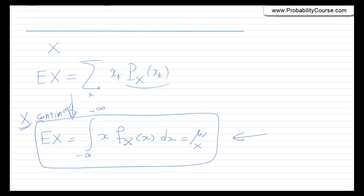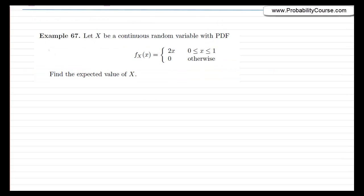So that's our formula. Let's look at an example to make sure we can use it. Let X be a continuous random variable with the following pdf, and I want you to find the expected value of X. Before doing that, it's a good idea to look at the pdf. If I want to plot this pdf, what do I get?